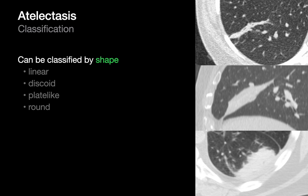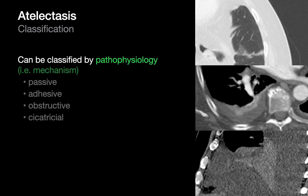Sometimes we classify atelectasis according to shape, which is when you hear terms like linear, round, or plate-like atelectasis. Alternatively, we can classify it by mechanism or pathophysiology, using terms like passive or obstructive atelectasis. Which classification scheme we use in a report may vary — at first it can sound confusing keeping track of all the different adjectives, but they just represent terms from different classification schemes that can be simultaneously correct.